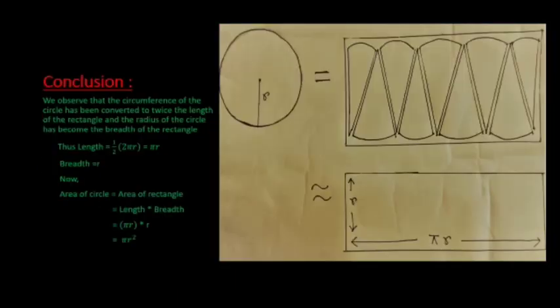We observe that the circumference of the circle has been converted to twice the length of the rectangle, and the radius of the circle has become the breadth of the rectangle. Thus length equals πr and breadth equals r.